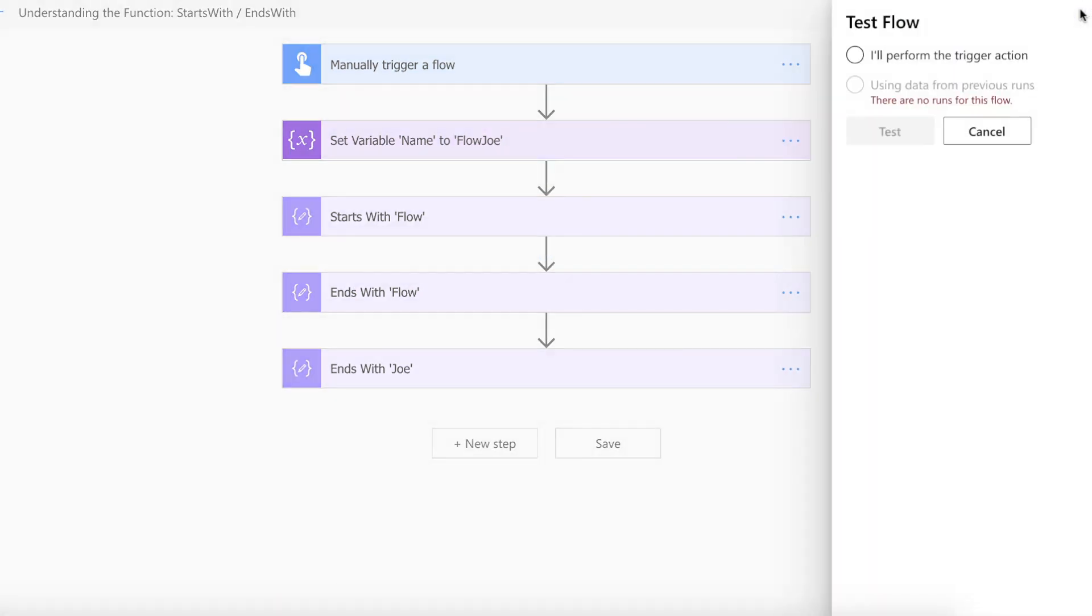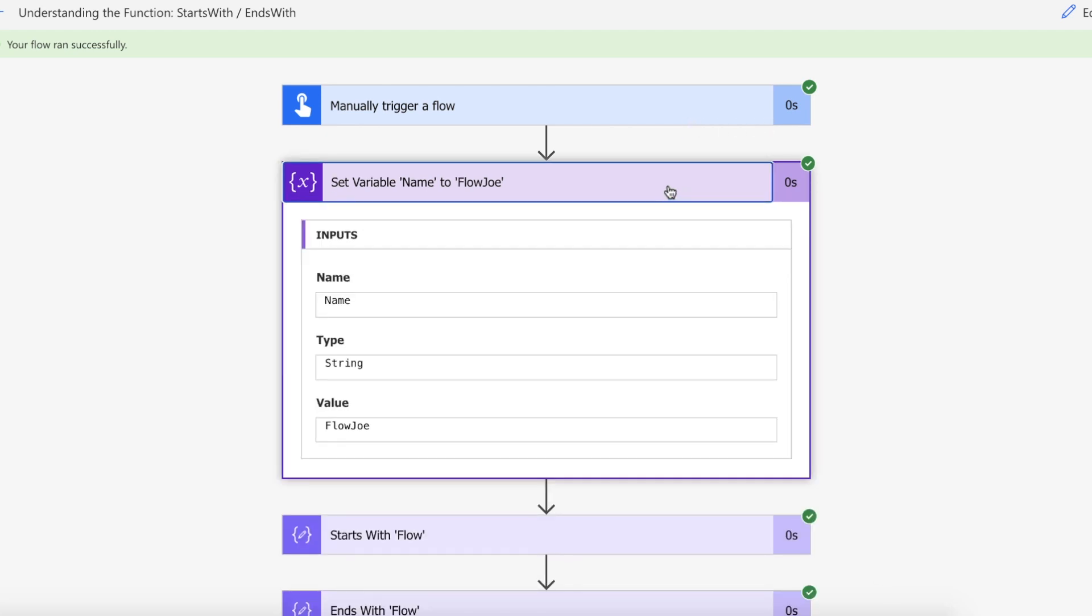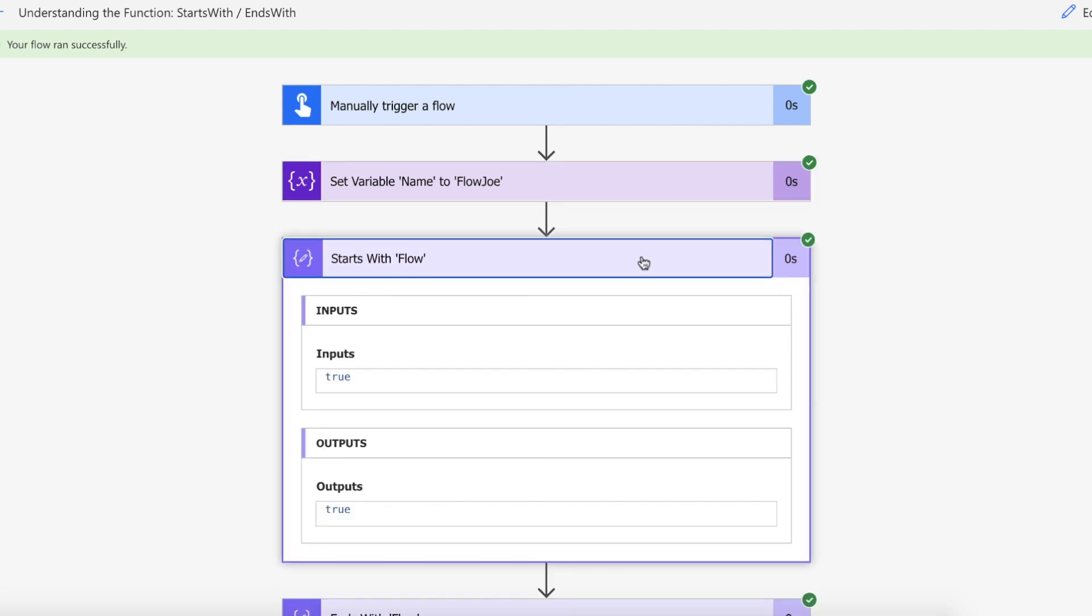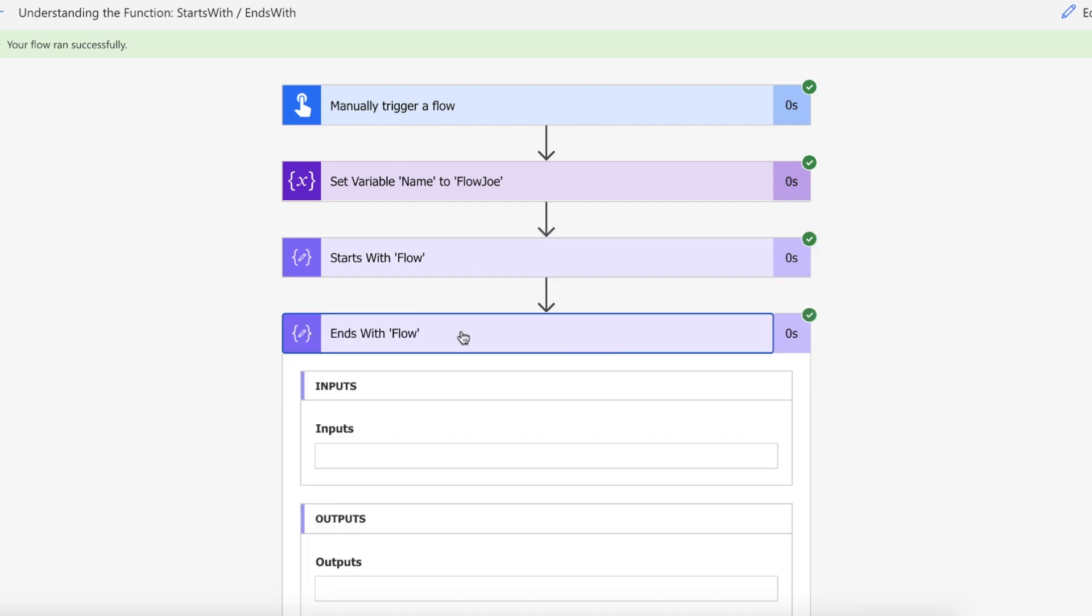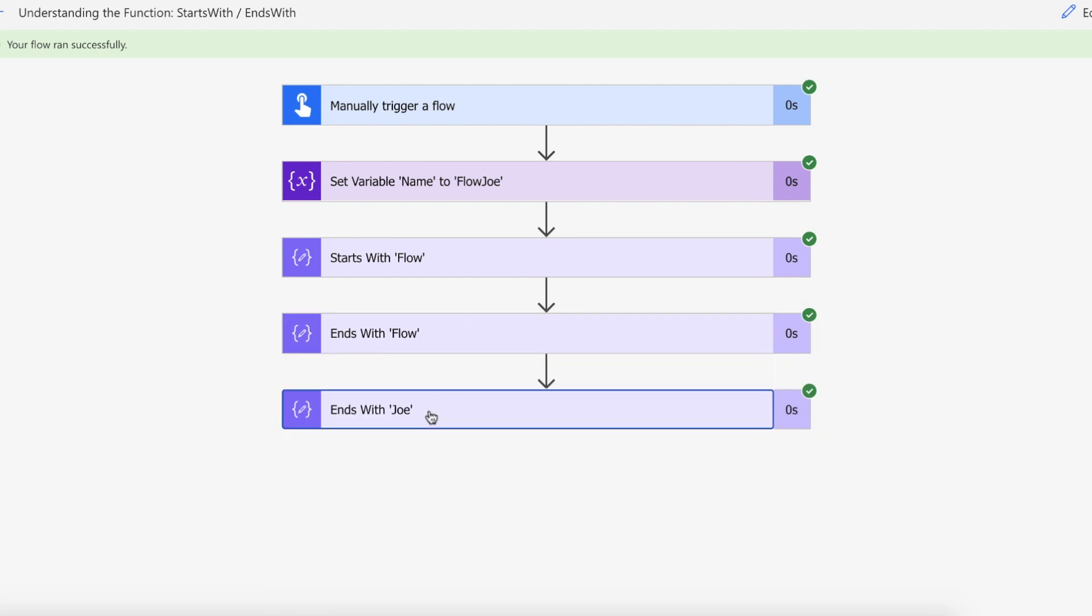We've manually triggered the flow. We set the variable NAME to FlowJoe. We've set startsWith 'Flow' and we get true because Flow is at the beginning of FlowJoe. We've set endsWith 'Flow' which is false because it ends with Joe. Then we've done endsWith 'Joe' and we get true. That is the startsWith and endsWith functions.